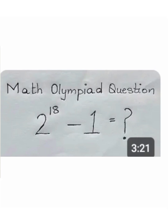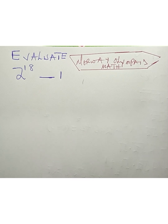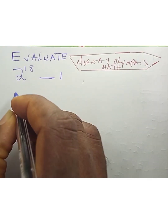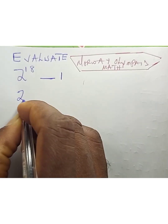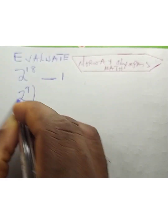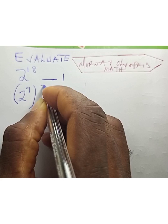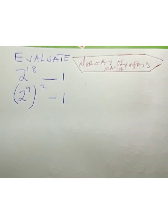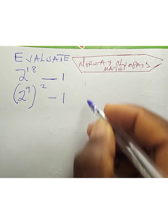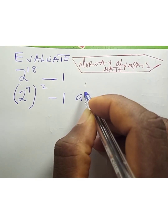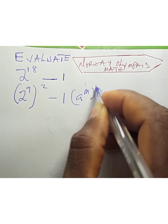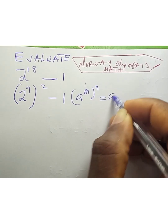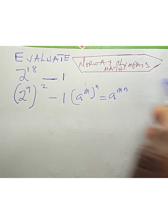Hello friends, welcome. We are asked to evaluate 2 raised to power 18 minus 1. To evaluate this, we can write this as 2 raised to power 9 times 2 minus 1, because 9 times 2 is 18. Remember that a raised to power m raised to power n equals a raised to power m times n.